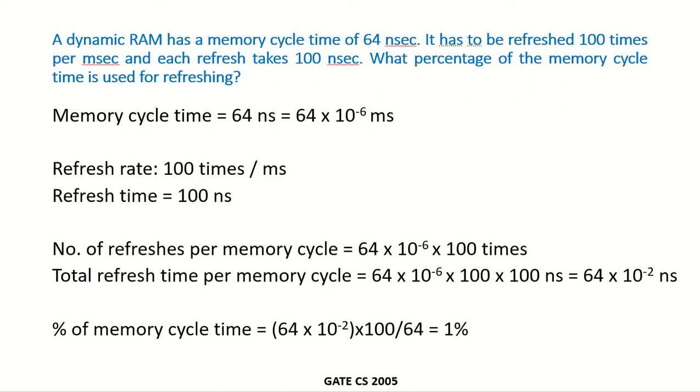A dynamic RAM has a memory cycle time of 64 nanoseconds. It has to be refreshed 100 times per millisecond and each refresh takes 100 nanoseconds. So what percentage of the memory cycle time is used for refreshing?